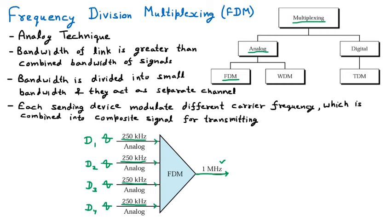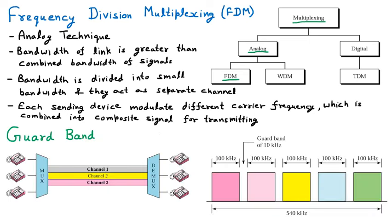Now we are discussing the guard band in FDM. We already know there are three devices — suppose three telephones sending data that is combined. Their data frequencies travel through channel 1, channel 2, and channel 3. Now these channels are sending three different frequencies, and these three frequencies should not merge together. That is why some kind of gap is given between them. These gaps are called the guard band.